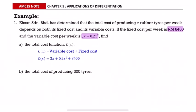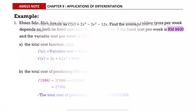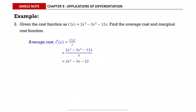The total cost of producing 300 tires is obtained by substituting 300 into the cost function, giving a total cost of RM 27,300. The average cost function equals the cost function divided by x — substitute and simplify. The marginal average cost equals the differentiation of the cost function.